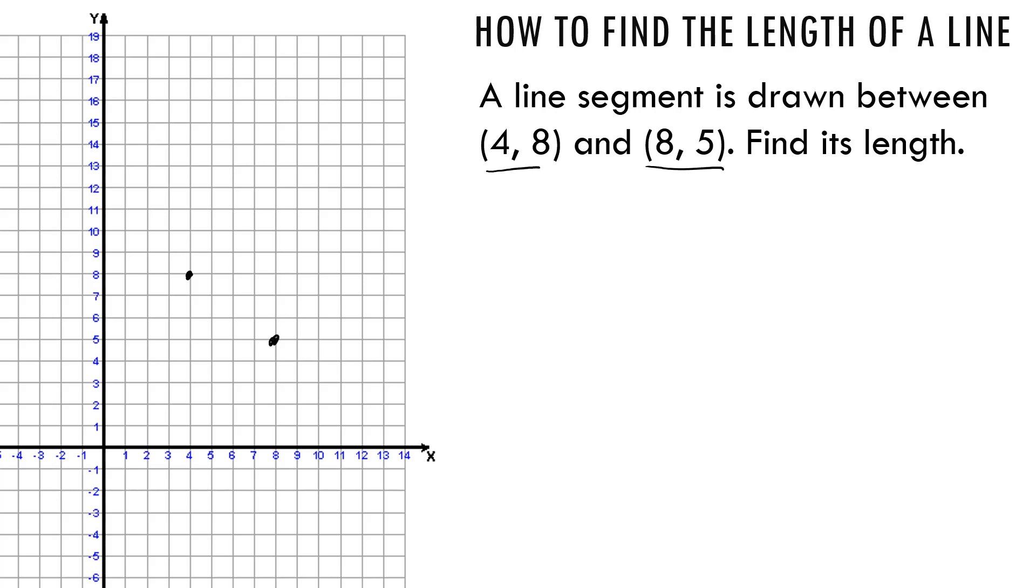Now here's the thing: this is a slanted line. If the line was straight up and down just like this, you could count it. You could literally say one, two, three, four. Or if it was straight left and right like that, you count it one, two, three. But how are you going to count the length of the line if it's slanted like that?